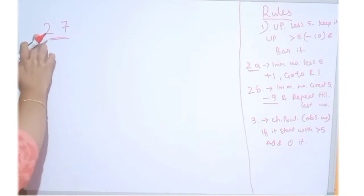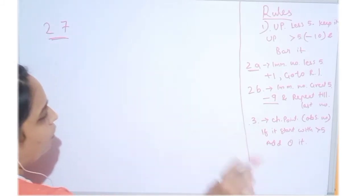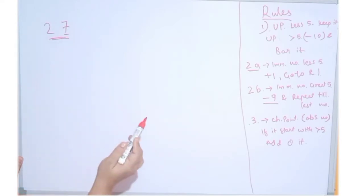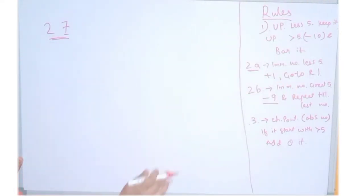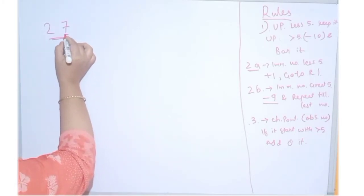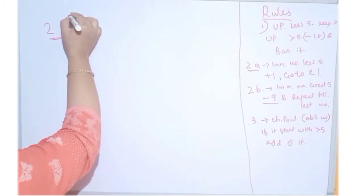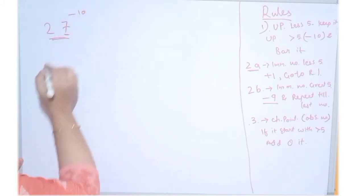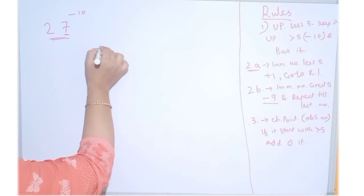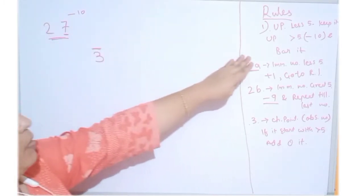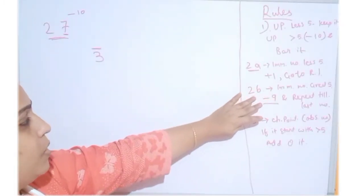27 — the unit digit 7 is greater than 5, so we apply Rule 1: subtract from 10. We get 3 and add a bar to it, giving us 3 bar. We saw a similar example in the previous video. So Rule 1 is implemented. Now we move towards Rule 2.